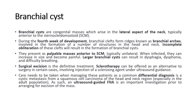Lastly, branchial cysts. Branchial cysts are congenital masses which arise in the lateral aspect of the neck, typically anterior to the sternocleidomastoid. During the fourth week of development, branchial clefts form ridges known as branchial arches, involved in the formation of a number of structures in the head and neck. Incomplete obliteration of these clefts will result in the formation of branchial cysts. They present as palpable masses anterior to the SCM, typically unilateral. When infected, they can increase in size and become painful. Larger branchial cysts can result in dysphagia, dysphonia, and difficulty breathing. Surgical excision is the definitive treatment.